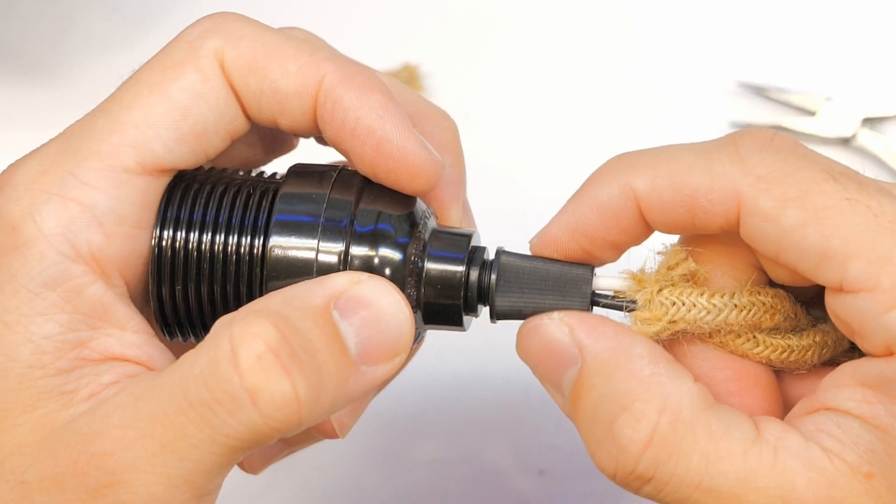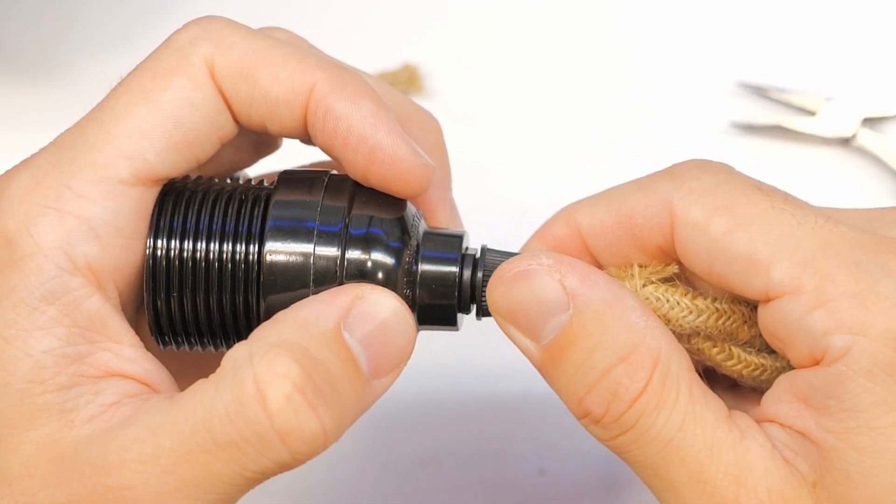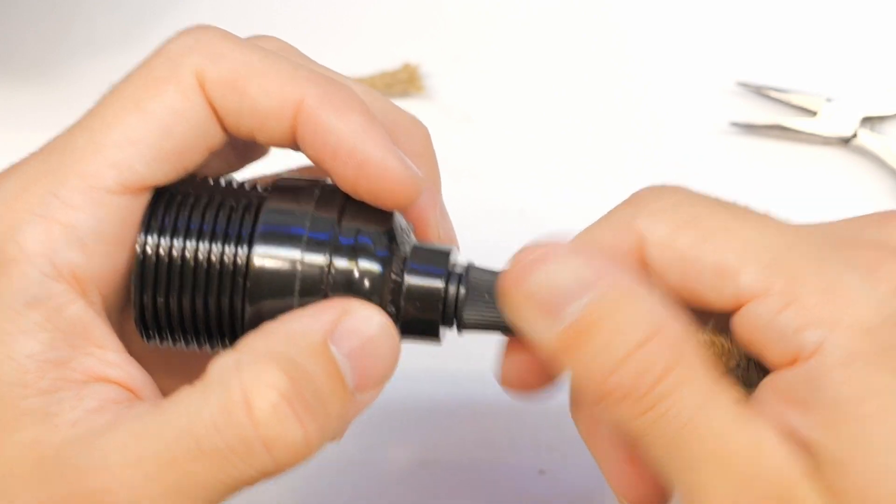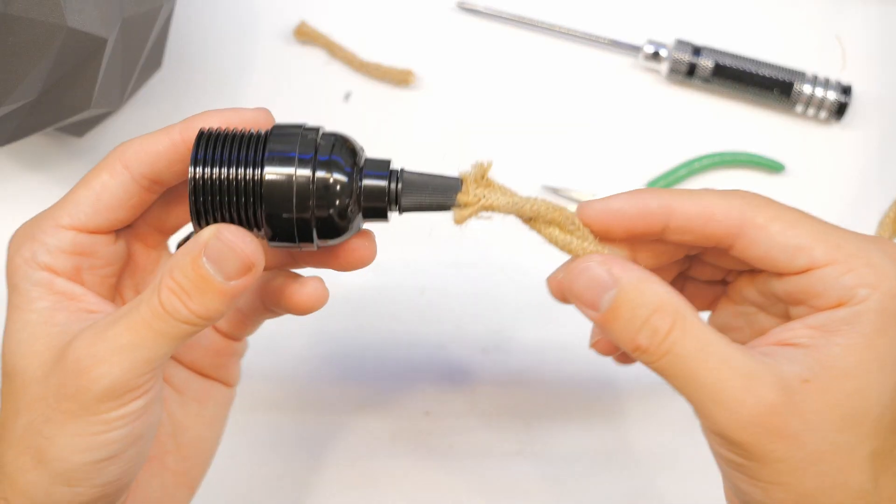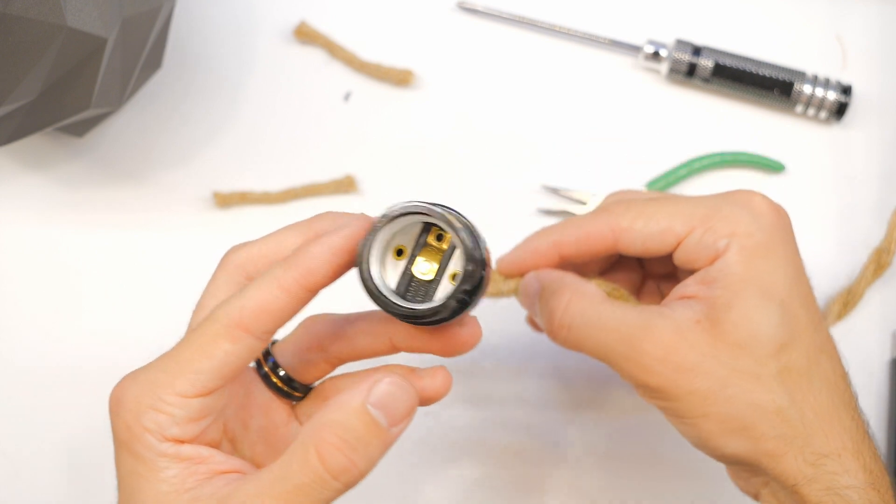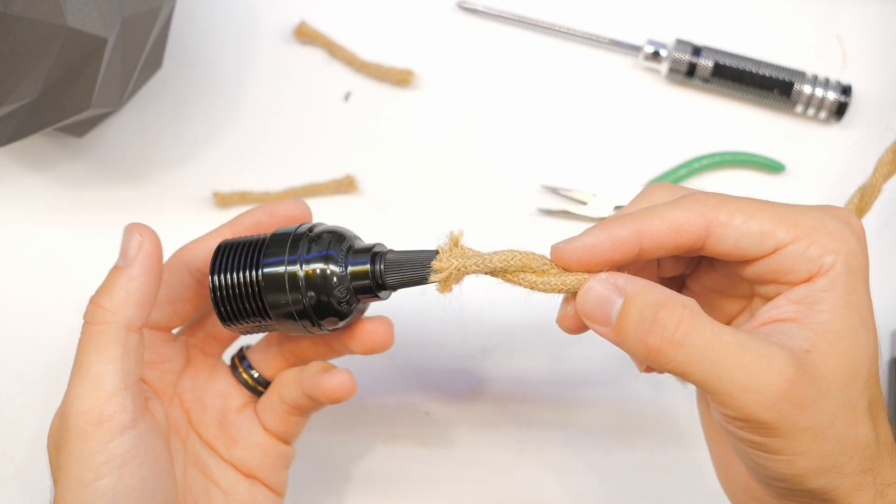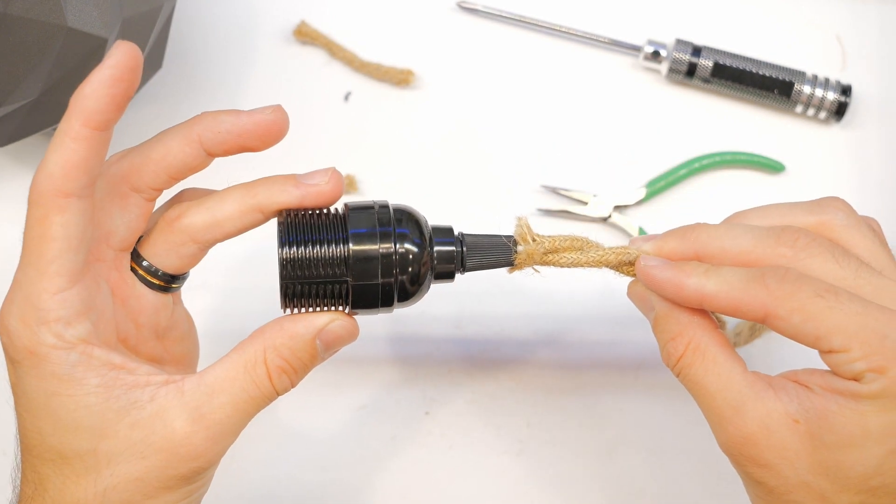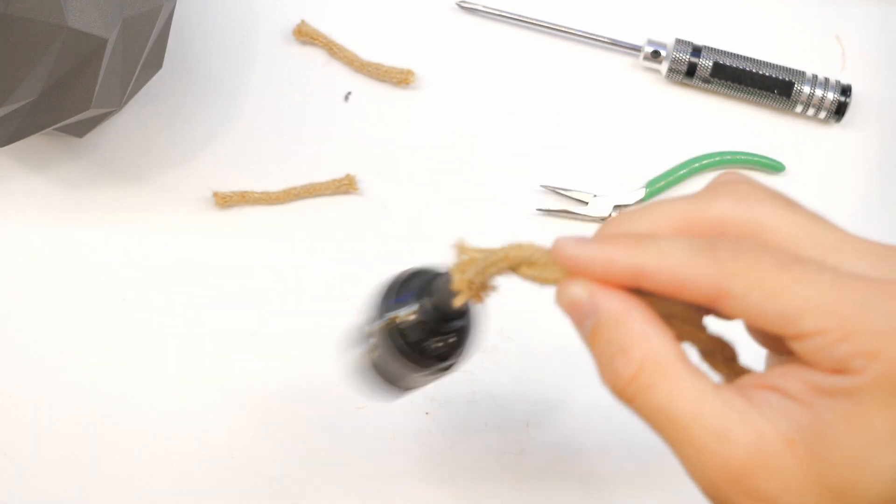I would say that little collar that screws down to clamp the wires in place does not need to be too tight because if you get it too tight, it's going to be really hard to actually unscrew everything later if you ever need to. Okay, with that done, we're just about done basically.